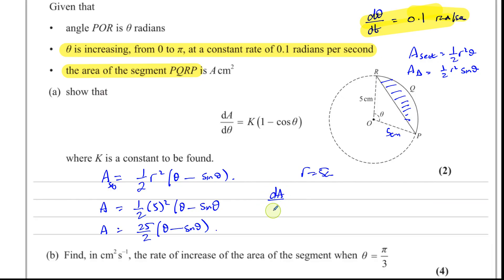They want us to show dA/dθ. Now, dA/dθ is going to be when we basically differentiate this. So you're going to have 25/2 times, this is going to be 1 minus cosine theta. If you differentiate theta, you get one. If you differentiate sine theta, you get cosine theta. Some people say, what about the 25/2? Well, that's a product of it.